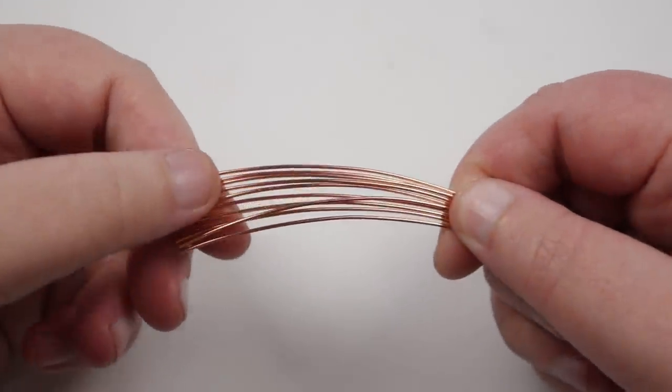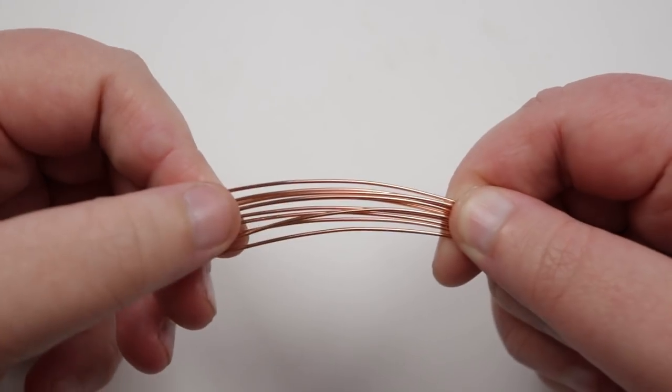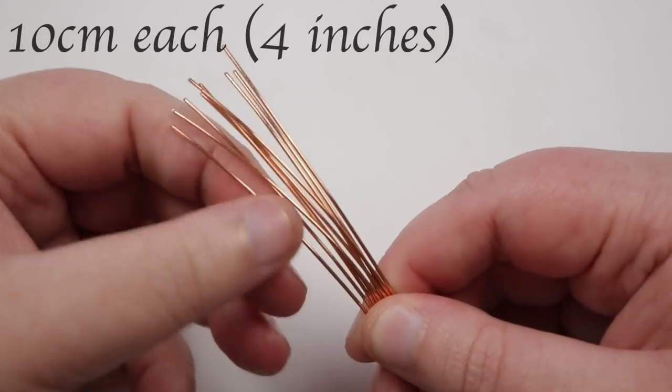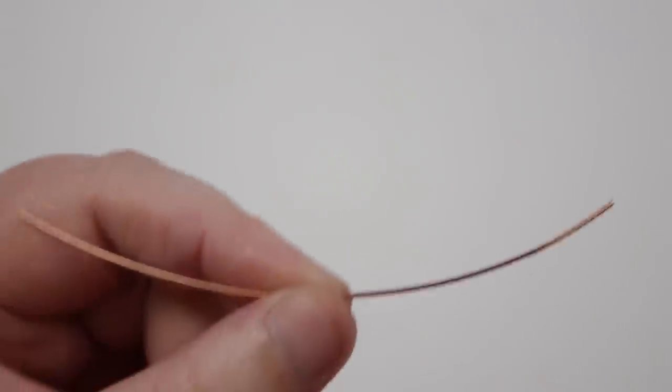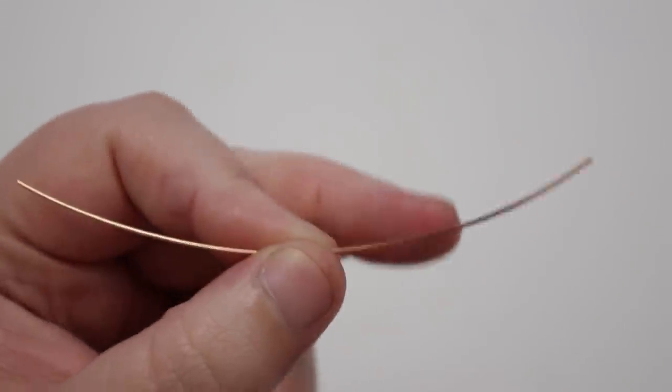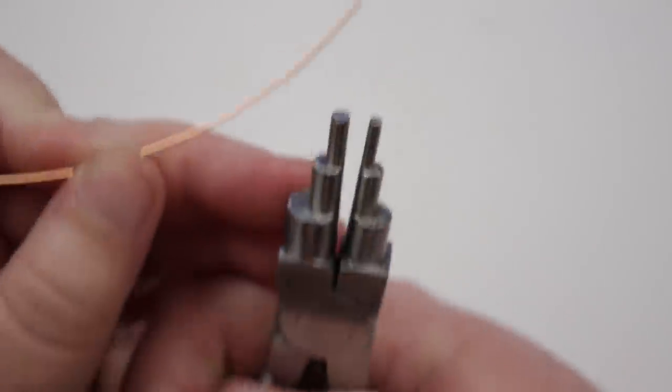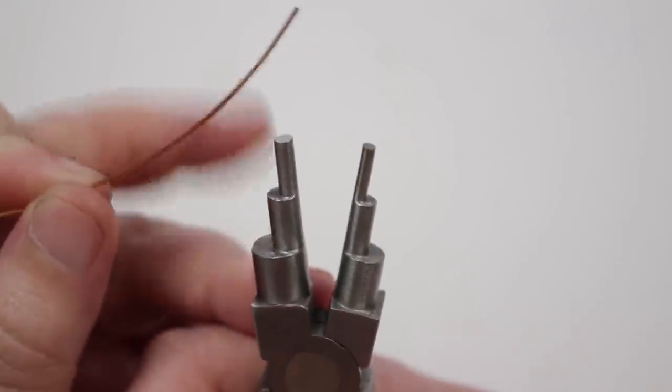Before we start making the chain, what I personally like to do is cut several lengths of my wire ready so I can just grab them as I need them. These lengths are each about 10 centimeters long. I grab a length of wire - we're going to use one length per link - and I'm going to be working with my stepped bail-making pliers.